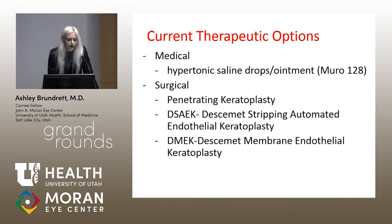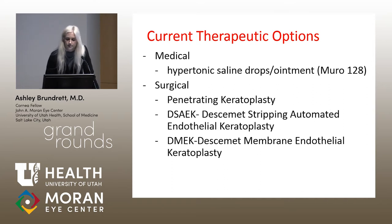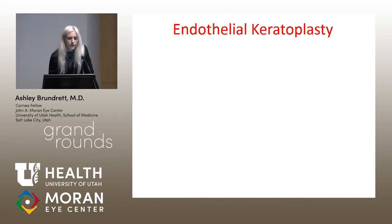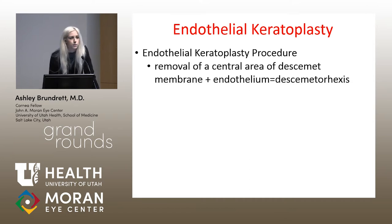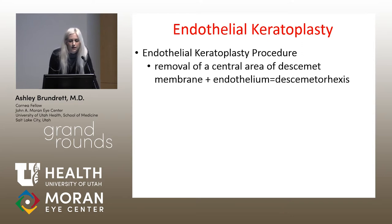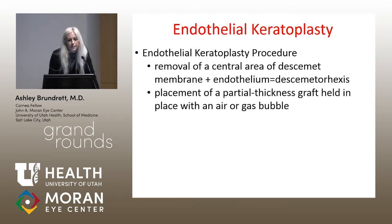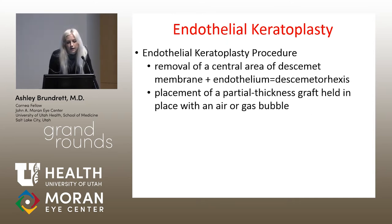There's DSAEK and DMEK — Descemet's stripping automated endothelial keratoplasty, as well as Descemet's membrane endothelial keratoplasty. The basic procedure is to remove the central area of Descemet's membrane and diseased endothelium, called a descemetorhexis, typically removing 6.5 to 8 millimeters of the central cornea, and then placing a partial thickness graft. It's held in place with a gas bubble, usually air, and sometimes with DMEK, SF6.